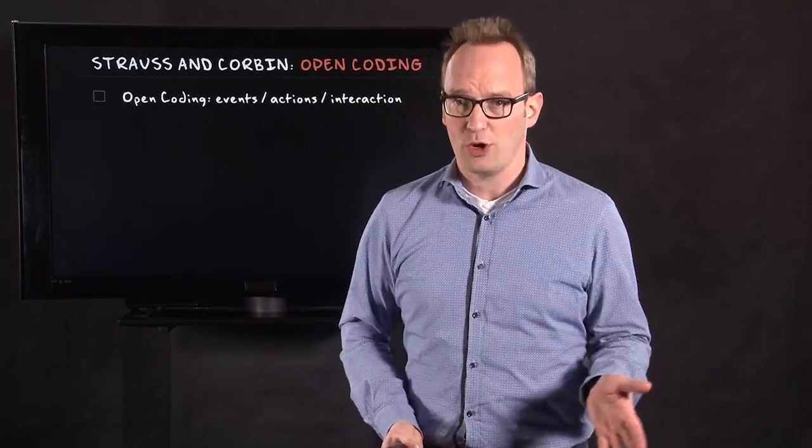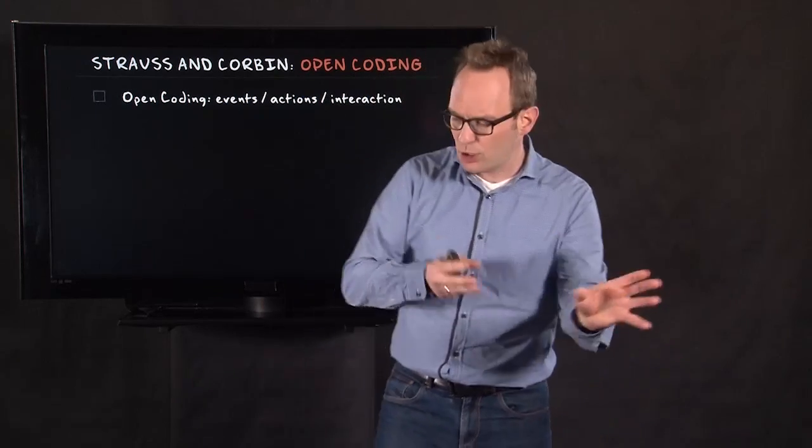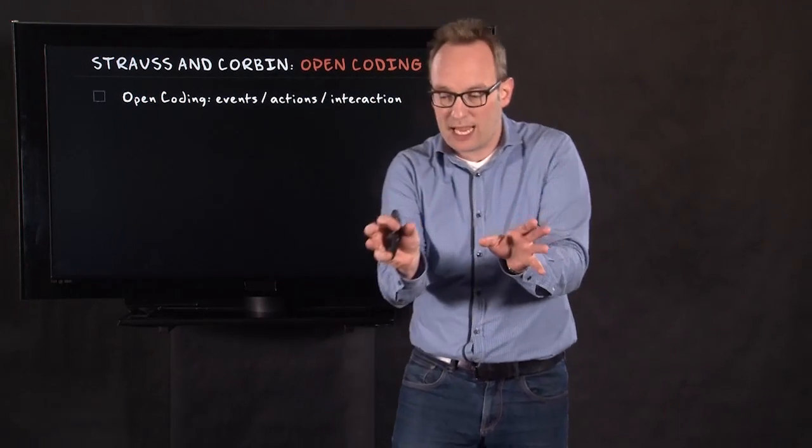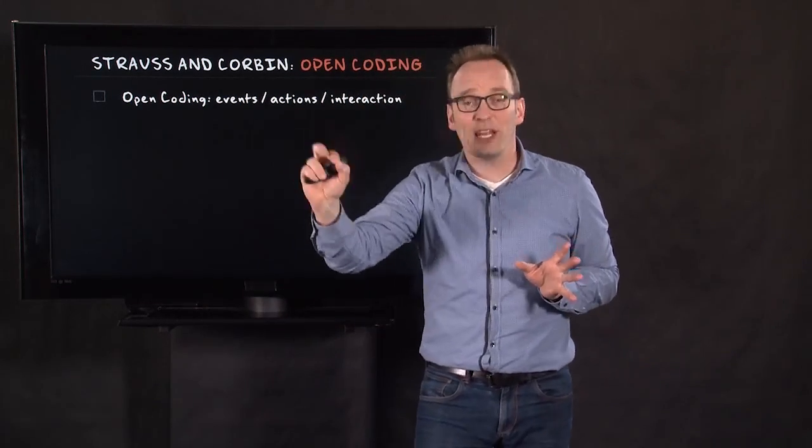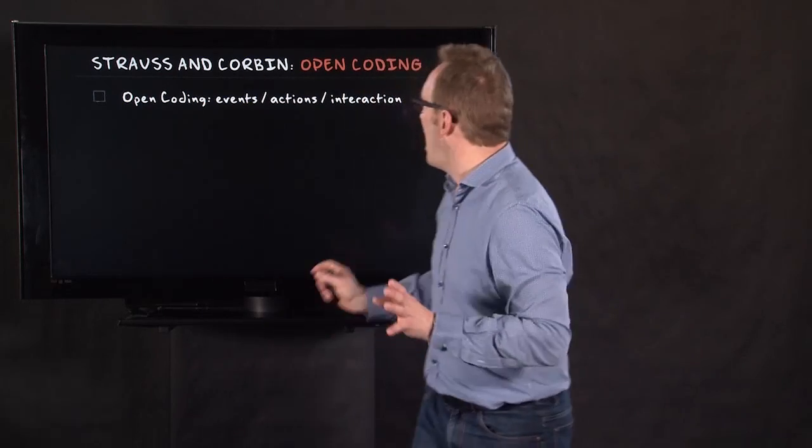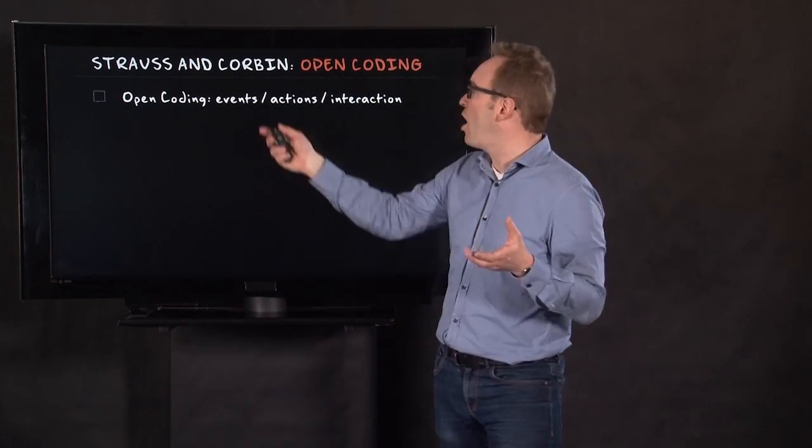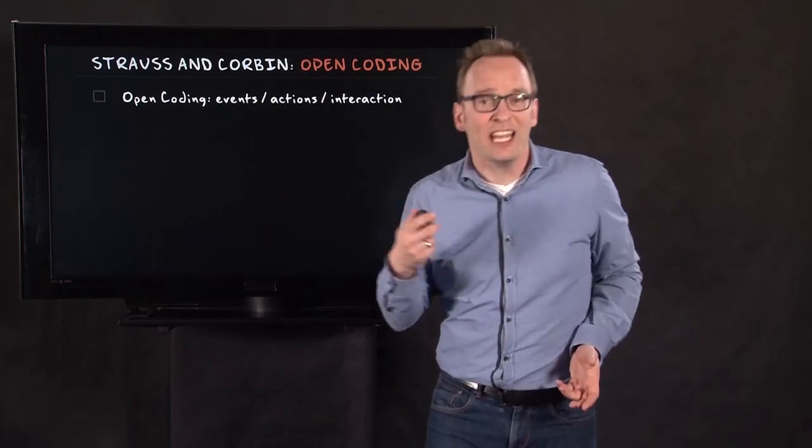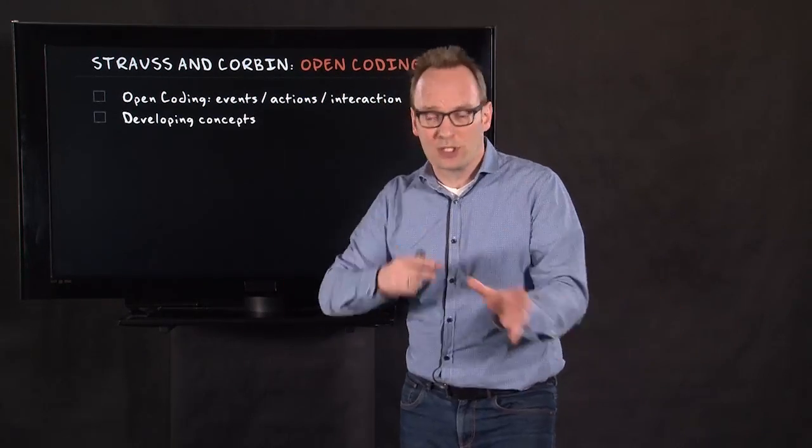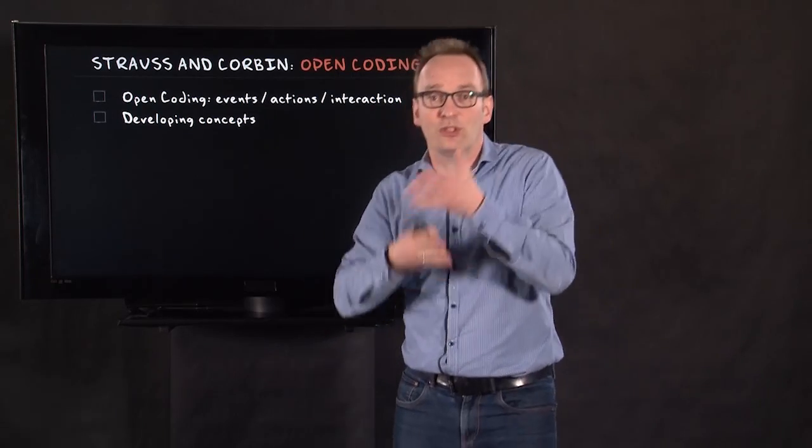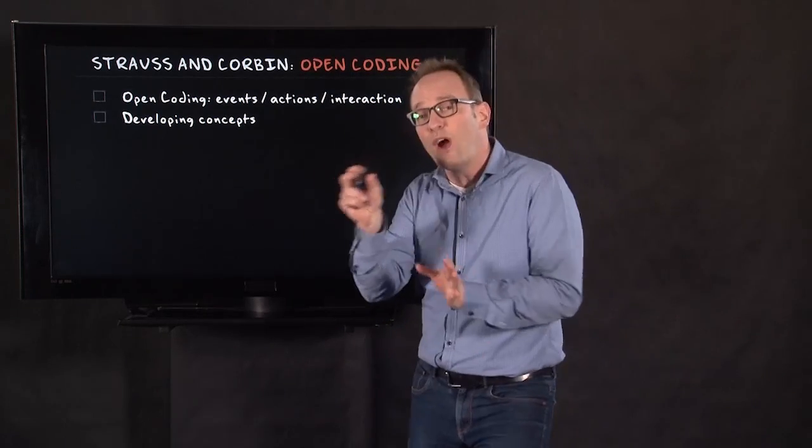So what they suggested is different steps in coding. The first step is open coding. When you do constant comparison, you compare a case with another case, an interview with another interview, and you start coding. You start scribbling down little notes in the margin. What you code for are events, actions or interactions. There's symbolic interactionism here. You try to develop concepts. You read your text, your transcripts, your field notes, and then you write down these little notes, these little codes.